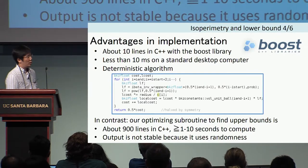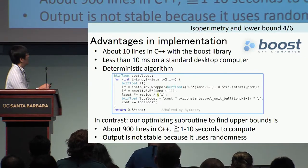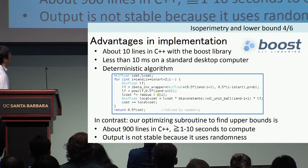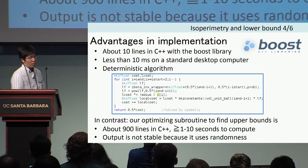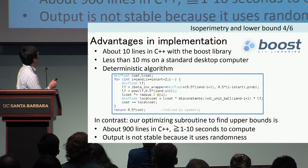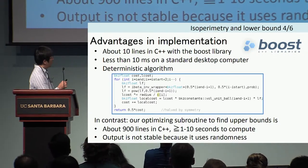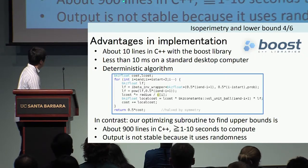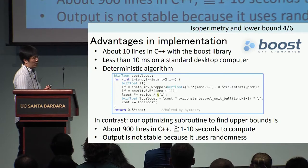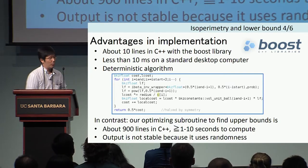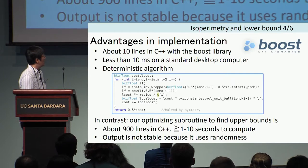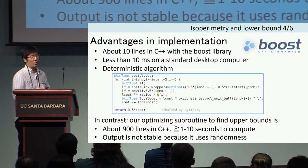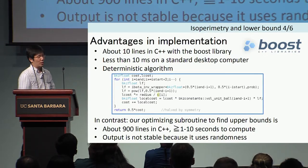We can compute this lower bound with about 10 lines of C++ code using the Boost library, and it runs in about 10 milliseconds. In contrast, finding the upper bound requires about 900 lines of C++ code and takes one to ten seconds or up to one minute. This shows that computing the lower bound is much simpler than computing the upper bound.